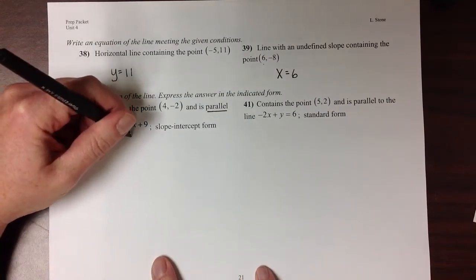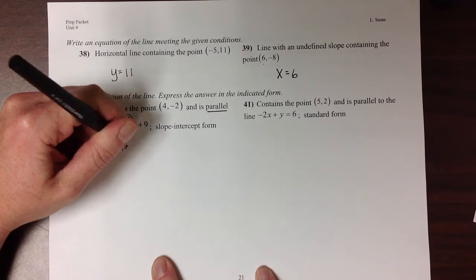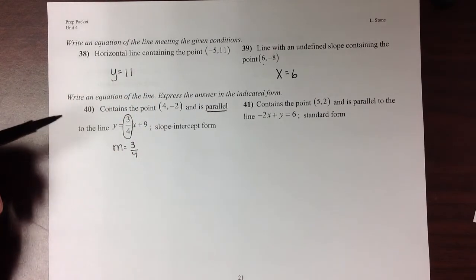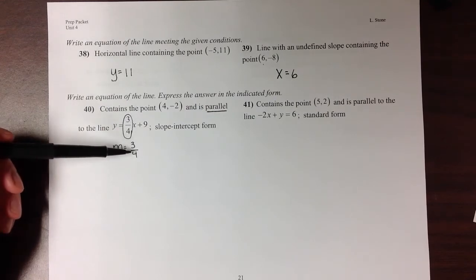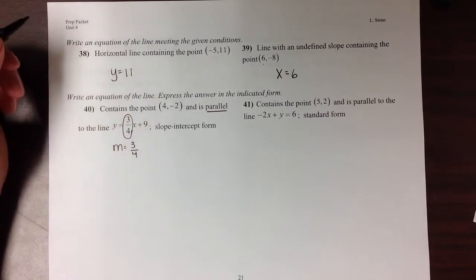So since the slope in this problem is 3/4, the slope in our equation is also going to be 3/4. And then they tell us that it contains the point (4, -2).